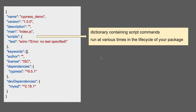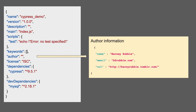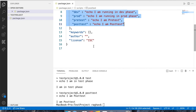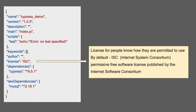Then you will see a keywords section where you can give an array of strings that can be used to identify your package in npm search — you can give some tags or keywords based on the project you are working on. Then there is an author section where you can give information about the author of the project.